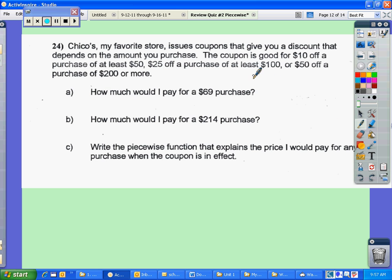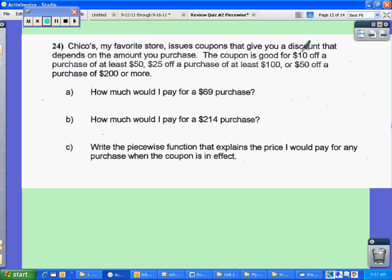Okay, looking at number 24, Chico's, my favorite store, issues coupons that give you a discount that depends on the amount you purchase. The coupon is good for $10 off a purchase of at least $50, $25 off a purchase of at least $100, or $50 off a purchase of $200 or more.